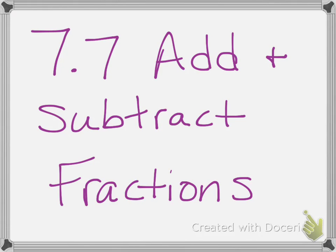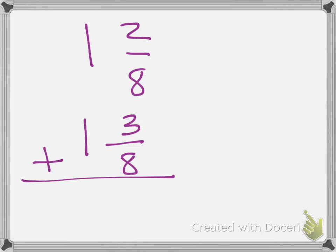Lesson 7.7 is adding and subtracting fractions, and I'm first going to go over how to add fractions. What I tell the kids is to put their fractions vertically and add them. That way we're going to start with our fraction.